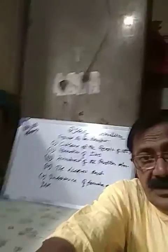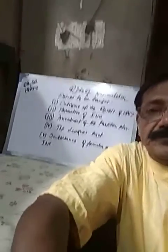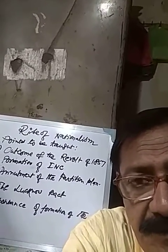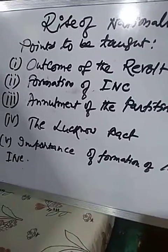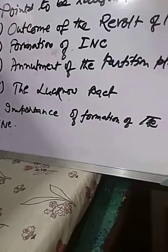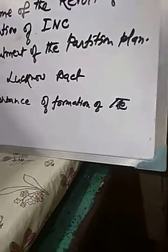My dear students of class 8A and 8B, look at the points mentioned on the board. First point: outcome of the revolt of 1857. Second point: formation of INC. Third: annulment of the partition plan. Fourth: the Lucknow Pact. Fifth: importance of formation of the INC.